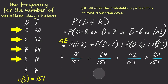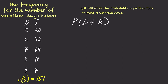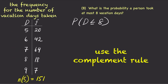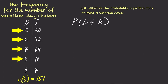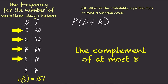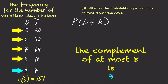Instead of doing this problem directly, we could also calculate p of d less than or equal to 8 by using the complement rule. Remember that less than or equal to 8 means d could be 8, 7, 6, or 5. So the complement of taking at most 8 vacation days is taking more than 8 vacation days. In this case, the complement is 9. So by the complement rule, p of d less than or equal to 8 is 1 minus p of d equals 9.